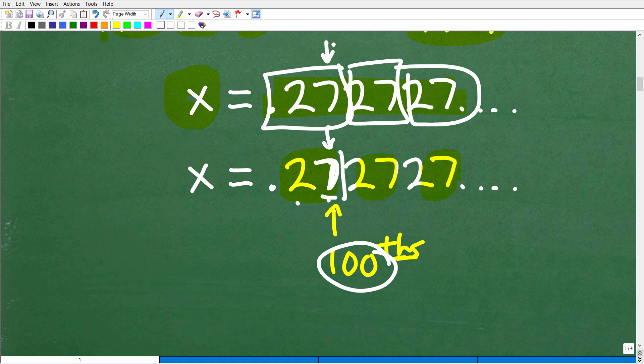So this repeating decimal ends at the hundredths place. We want to keep that hundredths place in mind, specifically 100. You'll see how we'll use this in just one second.